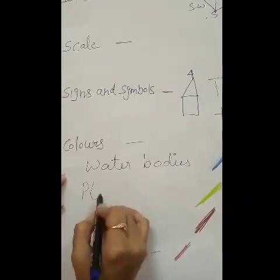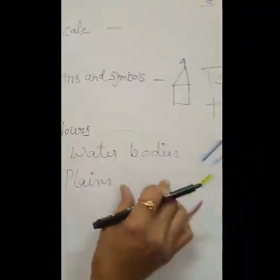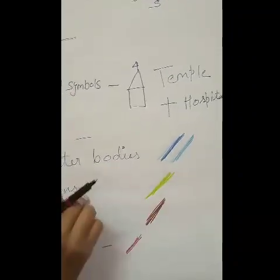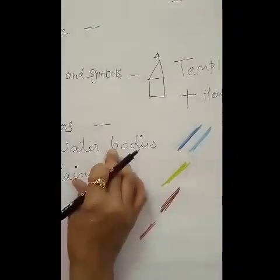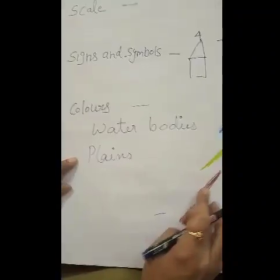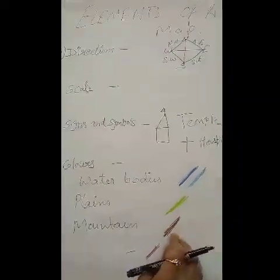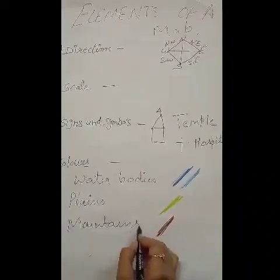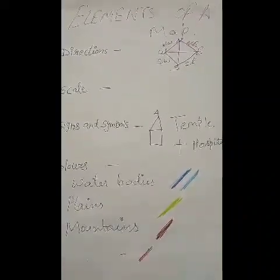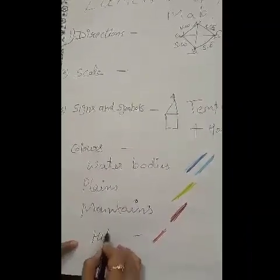Plains and different landforms are shown with green color. Dark brown color is used to show mountains, and light brown color is used to show hills.